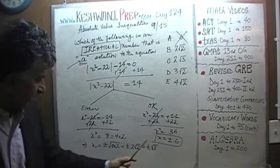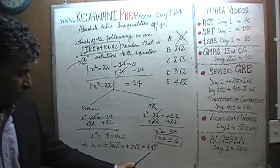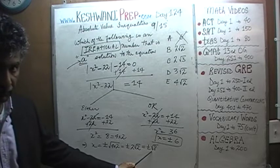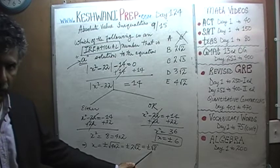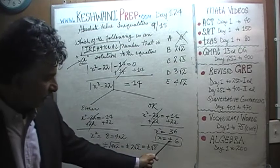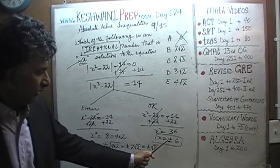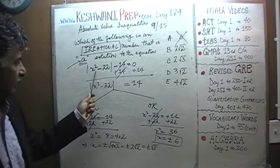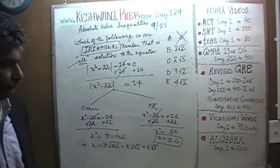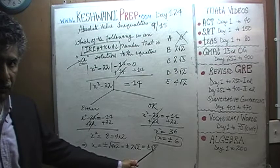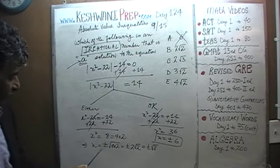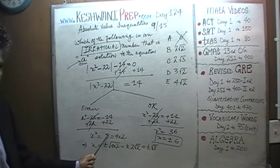Two solutions on one side: x equals positive root 8 or negative root 8 — those are the two irrational numbers. And two solutions on the other side: x equals positive 6 or negative 6. It's easy to verify: if x is positive or negative 6, then x squared is 36, and 36 minus 22 is 14. Absolute value of 14 is 14, and 14 minus 14 equals 0.